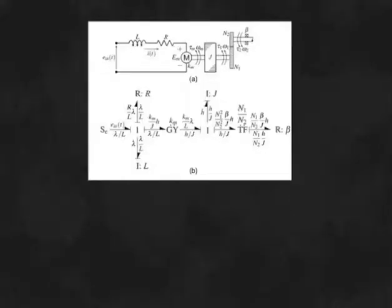Here we have the model for a permanent magnet DC motor with a gear reduction. There are two energy storing elements.